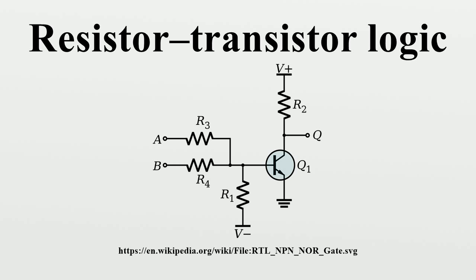Exceeding the threshold results in saturating the transistor. If all the input voltages are low, the transistor is cut off. The pull-down resistor R1 biases the transistor to the appropriate on-off threshold. The output is inverted since the collector-emitter voltage of transistor Q1 is taken as output and is high when the inputs are low. Thus, the analog resistive network and the analog transistor stage perform the logic function NOR.